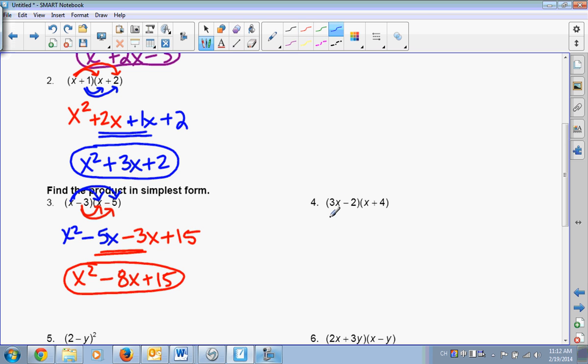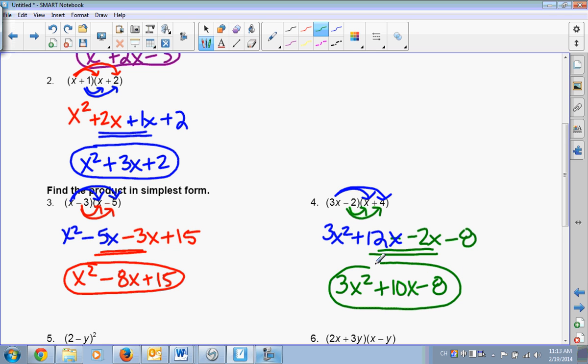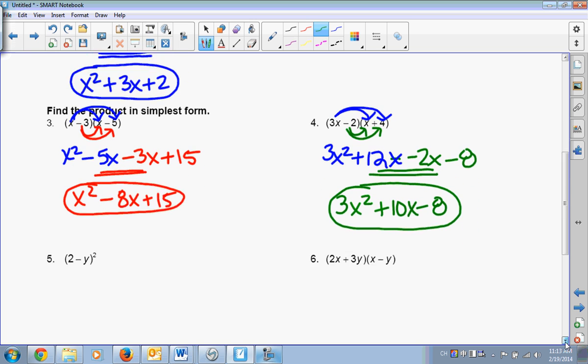All right. So let's keep on going. Same thing here. 3x times x is? 3x squared. 3x times 4? 12x. Negative 2 times x? Oops, I forgot the x, didn't I? Okay. Negative 2 times x is negative 2x. And negative 2 times 4? Negative 8. Two middle terms match. So 3x squared. Plus 10x. Minus 8. There you go.